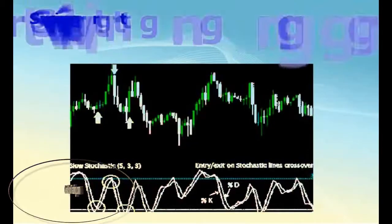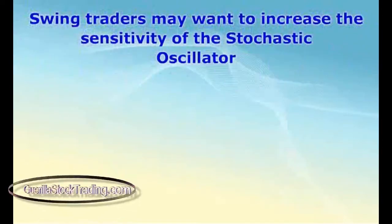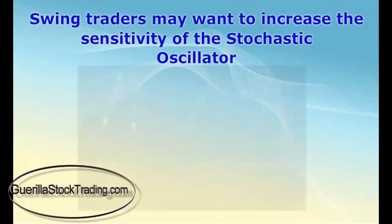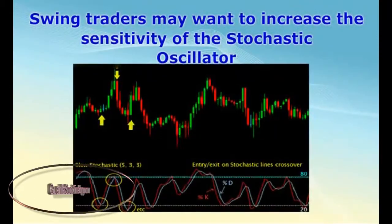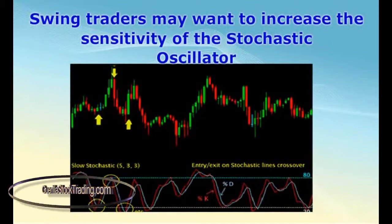Swing traders may want to increase the sensitivity of the stochastic oscillator by using a 5-3 setting, which is better for trading rapidly changing markets.